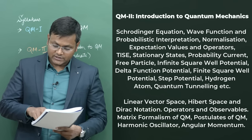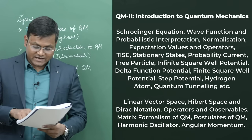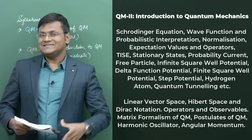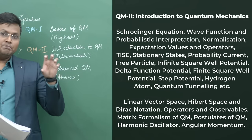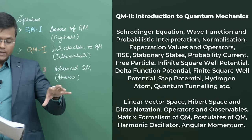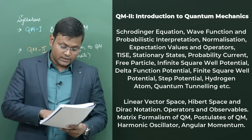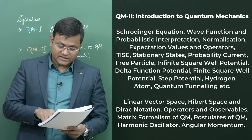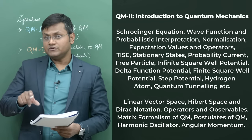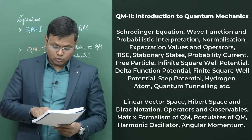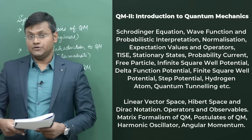We'll use Schrödinger's equation to solve various potential problems like the free particle, infinite square well potential, delta function potential, finite square well potential, step potential, and quantum tunneling. Then I'll introduce the matrix formulation of quantum mechanics, which will require a couple of lectures on linear vector spaces, Hilbert space, Dirac notation, and operators. We'll use this matrix formalism to solve problems of the harmonic oscillator, angular momentum, and more.